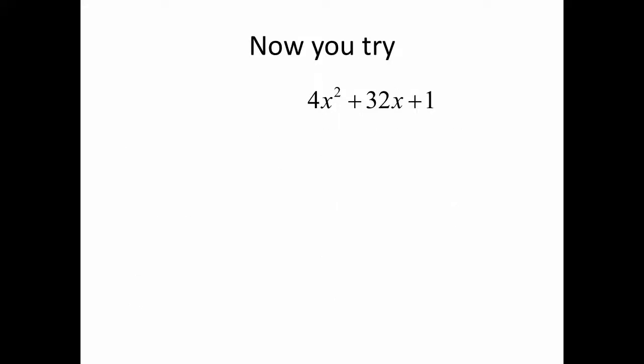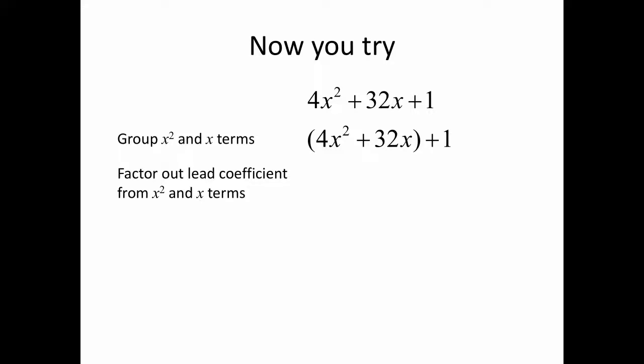Now I'd like you to try this example: 4x squared plus 32x plus 1. Stop the video, give it a try, and restart when you're ready to see the answer. Okay — as before, we'll group the x-squared and x terms, then factor out that lead coefficient of 4 and open up that empty space inside.